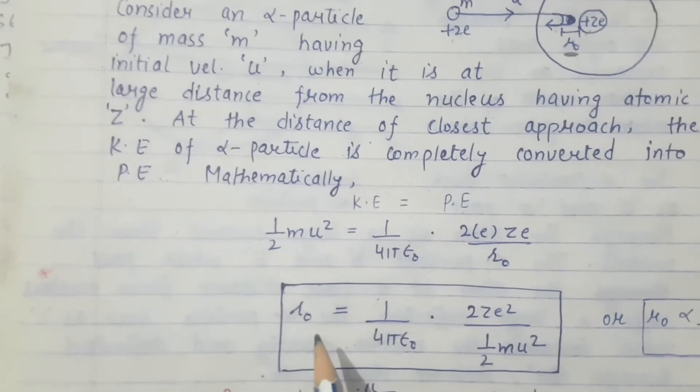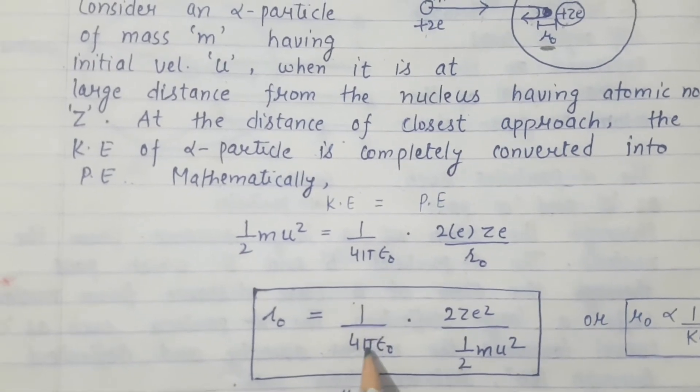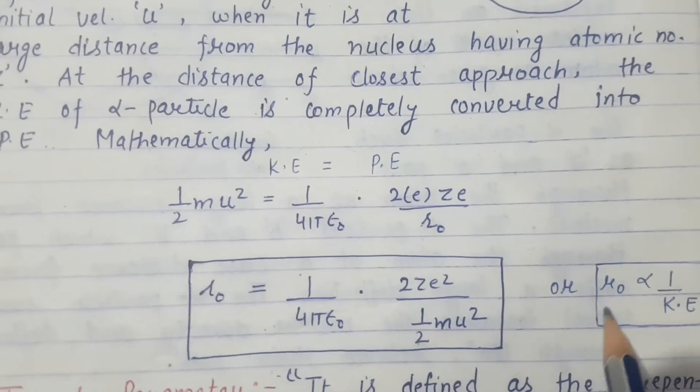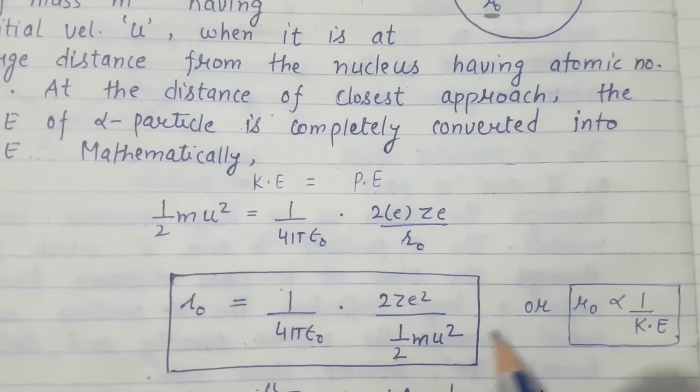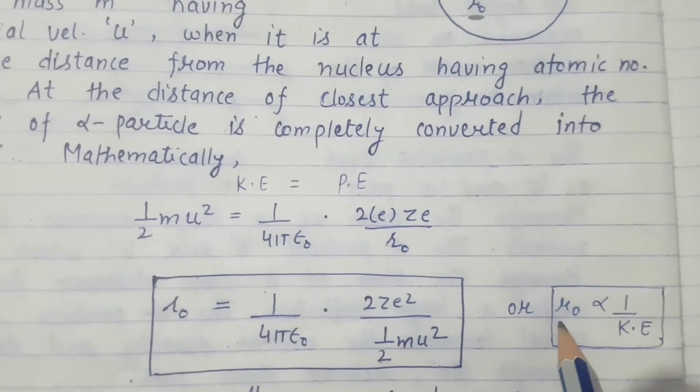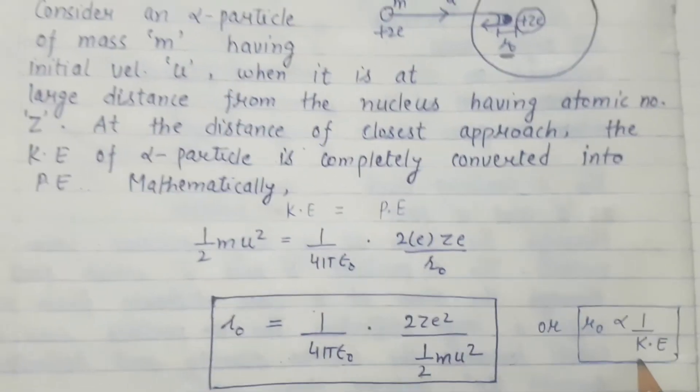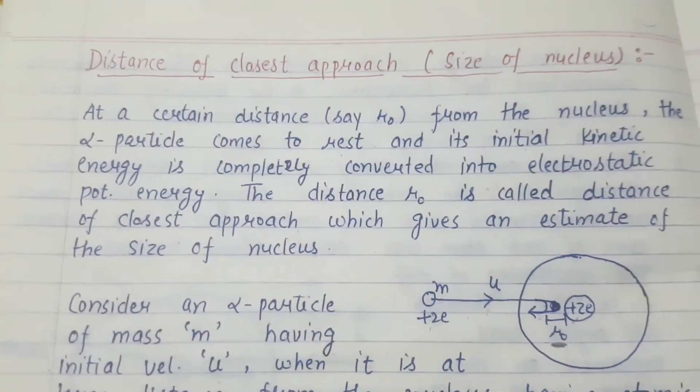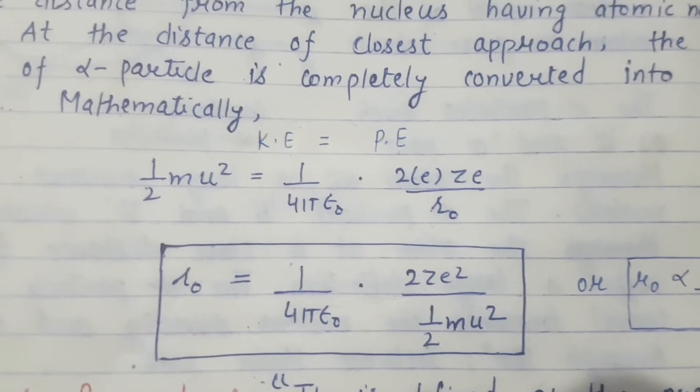From this equation we will get r naught. So r naught equals one by four pi epsilon naught times 2ZE square divided by half mu square. This means that r naught is proportional to one by kinetic energy.